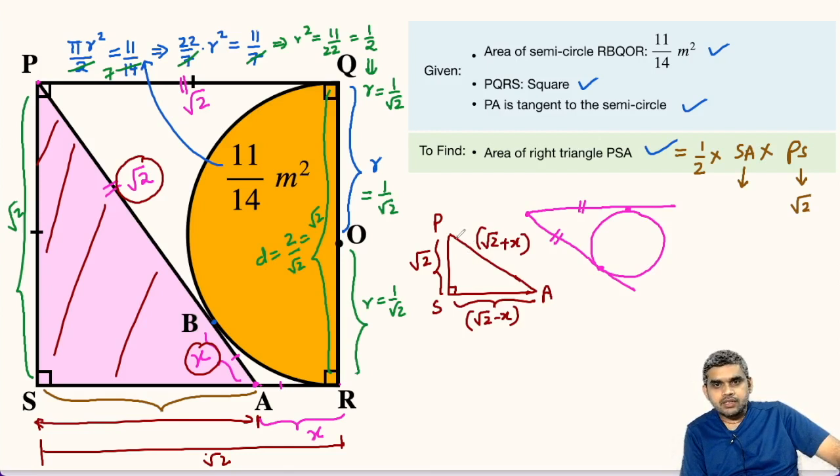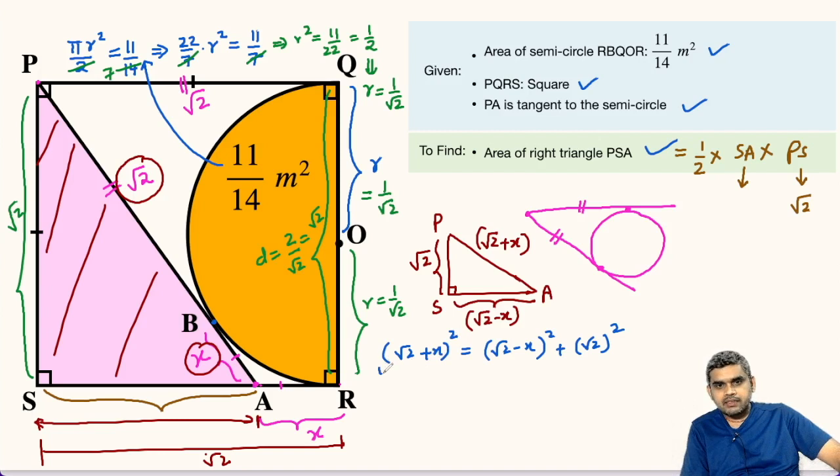In this triangle PSA, we will apply Pythagorean theorem in order to find the value of X. So, we can write root 2 plus X whole square equals root 2 minus X whole square plus root 2 square. Now, we will use the identity A plus B whole square to expand this. So, this will give us 2 plus X² plus 2 root 2 X equals. Likewise, we will use the identity A minus B whole square and we will get 2 plus X² minus 2 root 2 X. And finally, this will be 2.